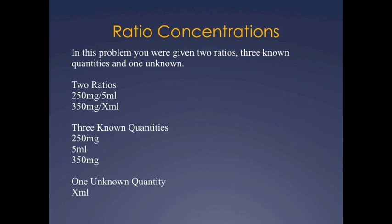In this problem you were given two ratios, three known quantities and one unknown. The two ratios are 250 milligram per 5ml, which is what you have in stock, and 350 milligram per x ml, which is what the doctor wrote as 350 milligram PO TID. The x ml represents the ml that you want to find out would equal 350 milligrams.